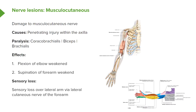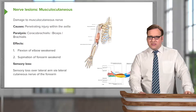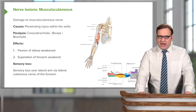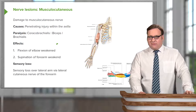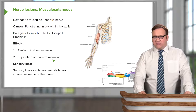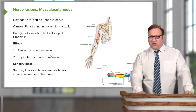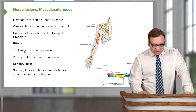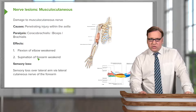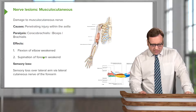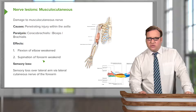If the musculocutaneous nerve is damaged, these muscles will not have that innervation and will become paralyzed. If you appreciate the effect of these muscles contracting on the elbow joint and the radioulnar joints, you can appreciate that damage to the musculocutaneous nerve will lead to weakened flexion at the elbow and also weakened supination of the forearm.